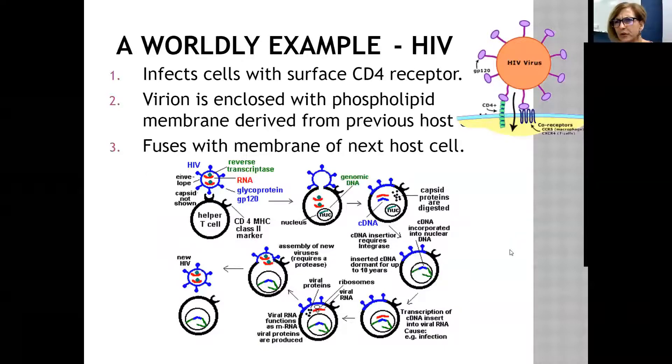A good example is HIV, which is actually a retrovirus. It infects cells with surface CD4s. You have certain marker proteins on the surface of your cell, and your virus has to match them. About 1% of the population is actually immune to HIV because they have a mutated CD4 receptor, so the HIV cannot bind and therefore cannot penetrate. In this case, we have the genetic code enclosed by a phospholipid membrane from the previous host cell. It's like taking part of the membrane. This is why it goes undetected. It fuses with the membrane like phagocytosis, fusing with the membrane of the next host cell.